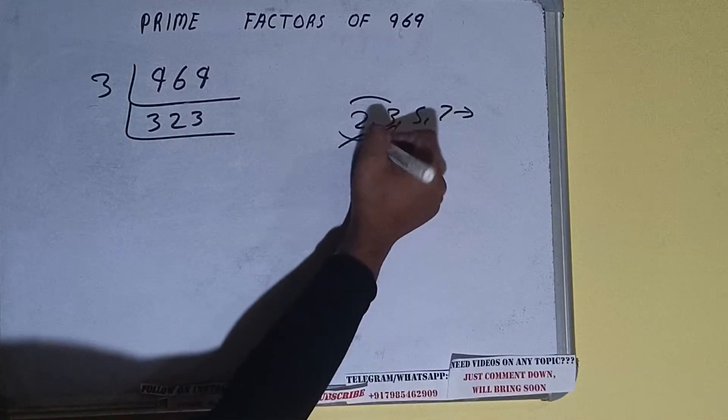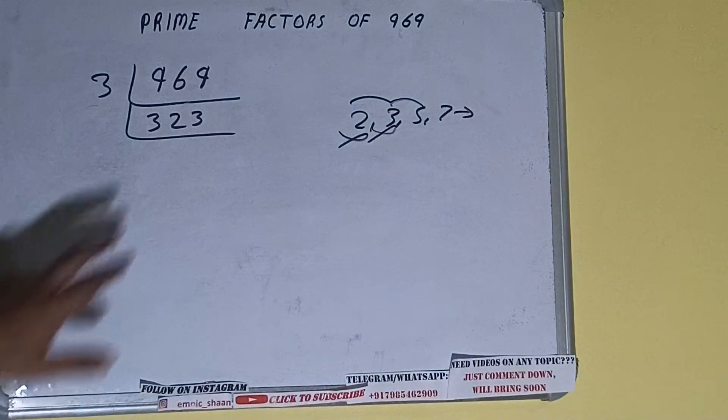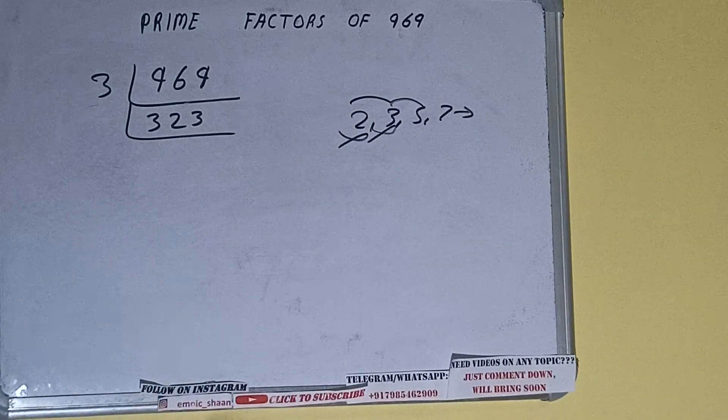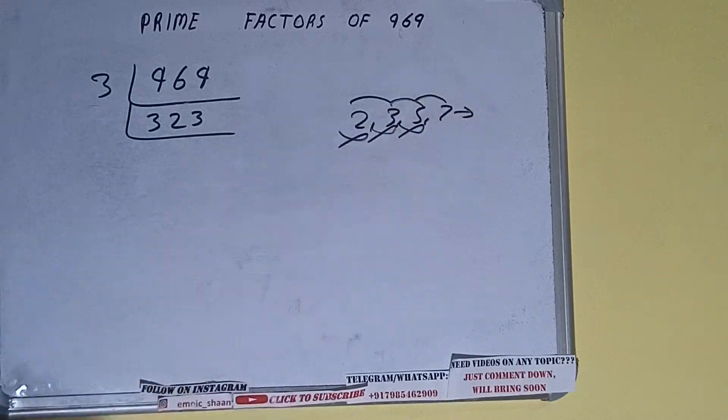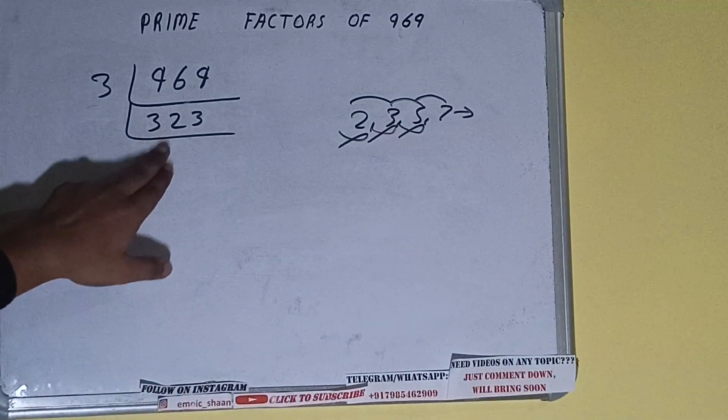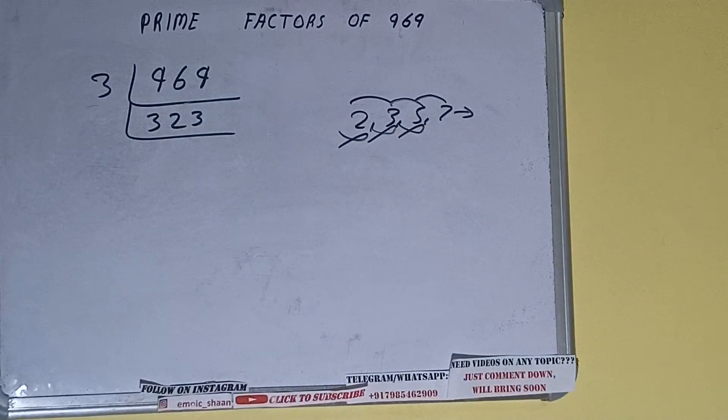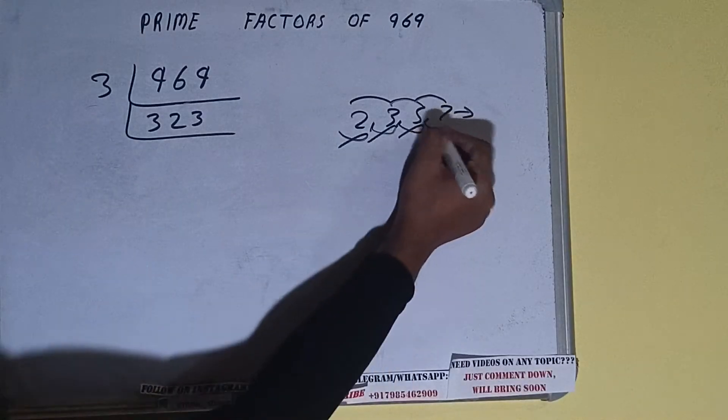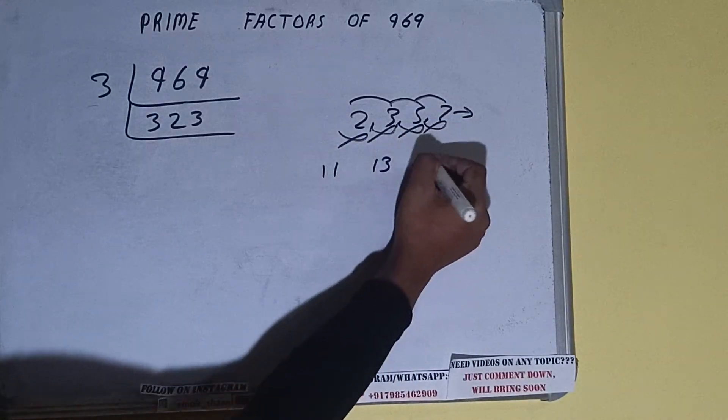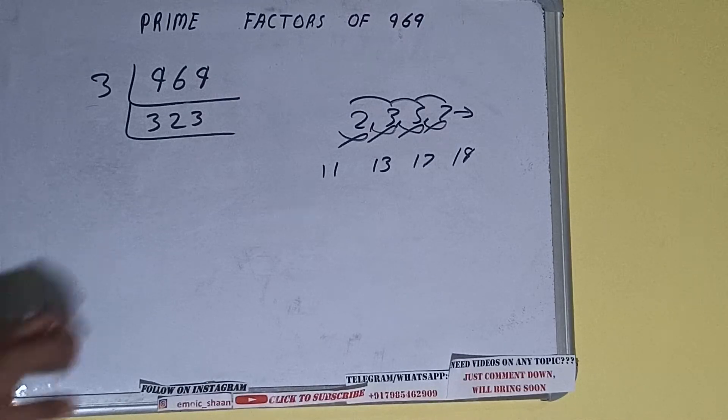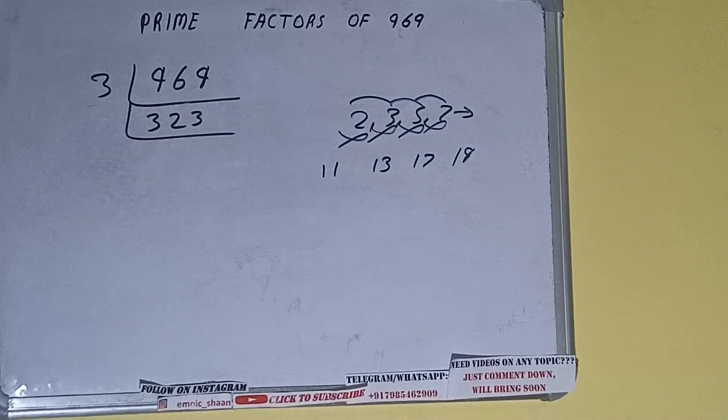So we'll check with the next lowest prime number, that is 5. The last digit is neither 5 nor 0, so it is not divisible by 5. Let's check with 7. Not divisible with 7 also. Let's check with 11, then 13, then 17, and then 19.